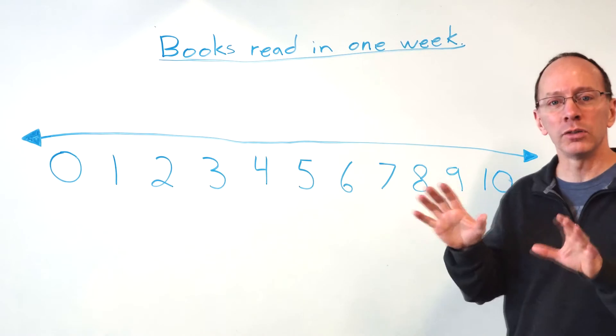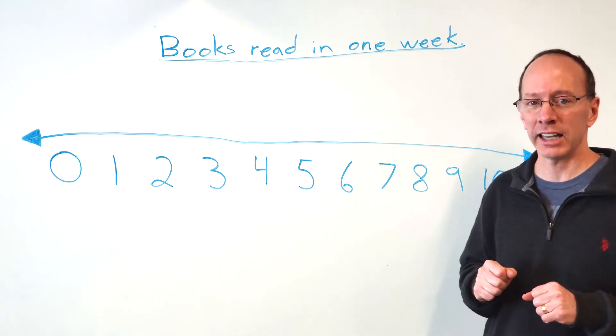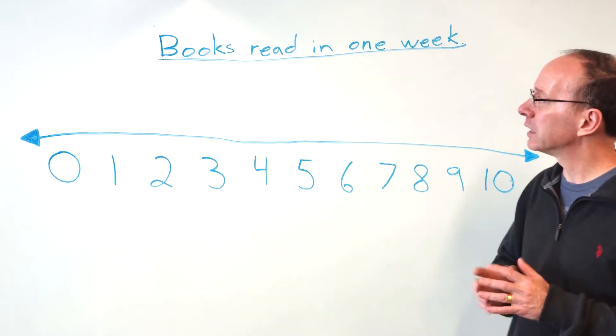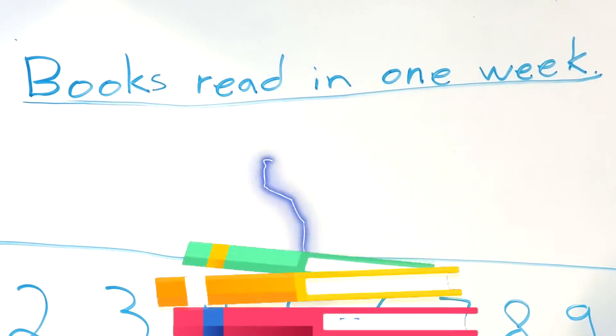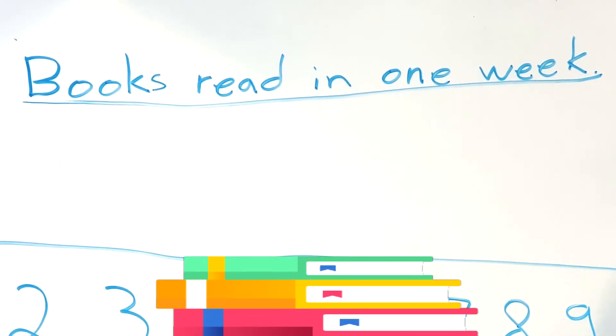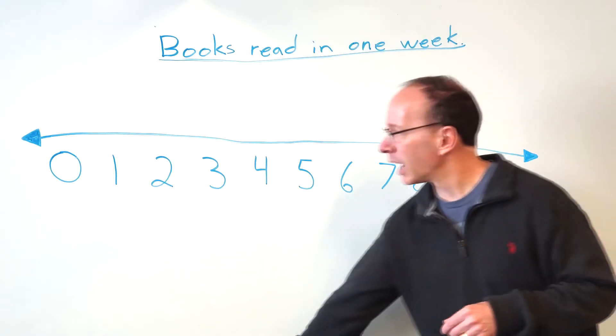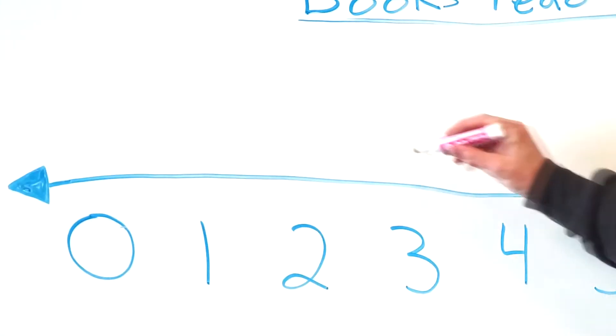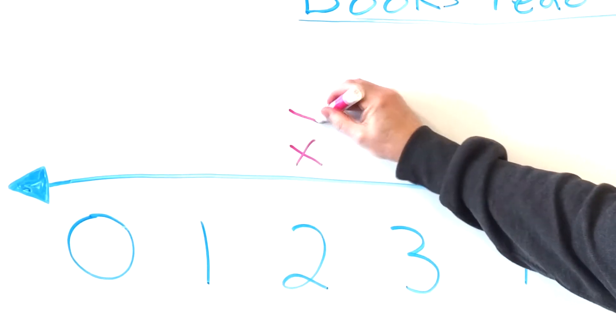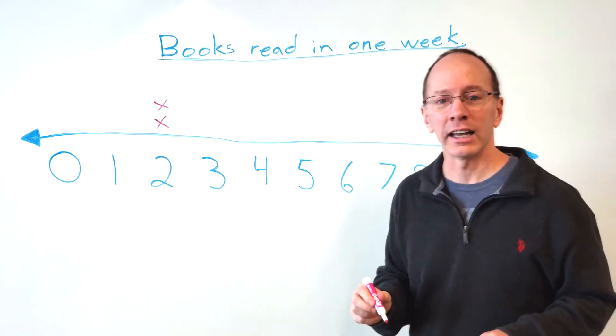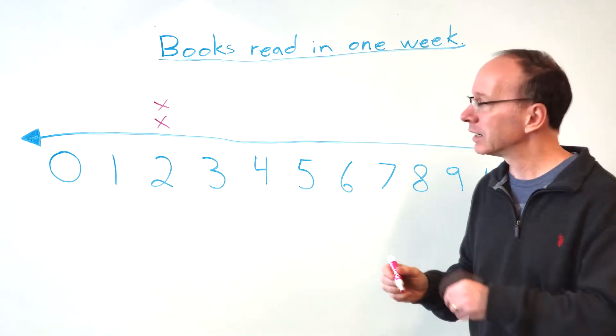The first thing you have to do with a line plot is have a title. So our title is Books Read in One Week. So I asked students how many books they read in one week. And so I had two students say they read two books in one week.